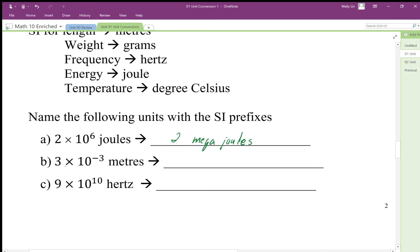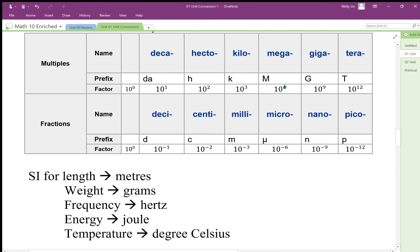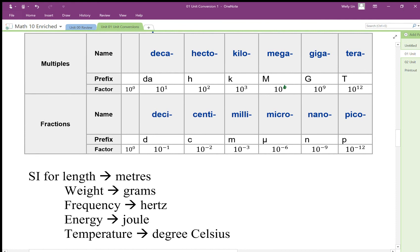Here we have 3 times 10 to the negative 3 meters. That's one thousandth of a meter, which is familiar to us—it's 3 millimeters. If we have 10 to the 10 hertz, there's no 10 to the 10, there's 10 to the 9 which is giga and 10 to the 12 which is terra.